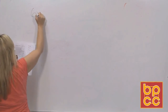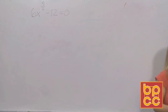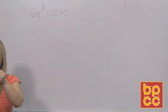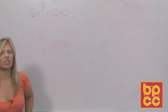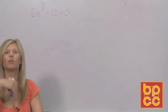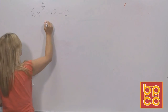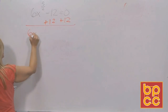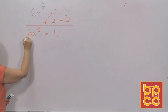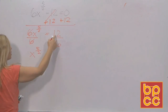Let's look at the last rational exponent equation: 6x to the five-halves minus 12 equals 0. Step one is to isolate the exponent. Add 12 to get 6x to the five-halves equals 12. The 6 is connected by multiplication and has nothing to do with the exponent, so divide both sides by 6. Now you have x to the five-halves equals 2.